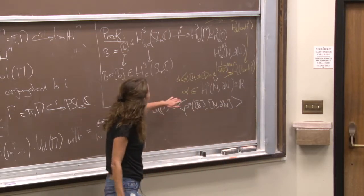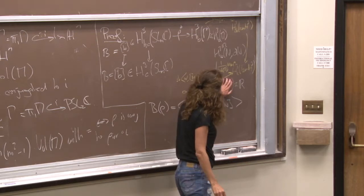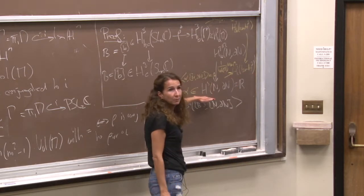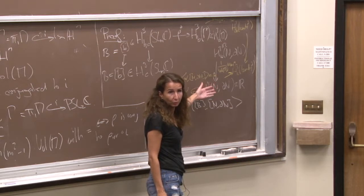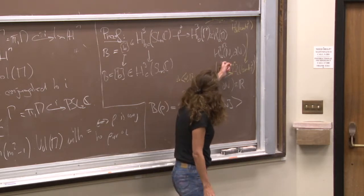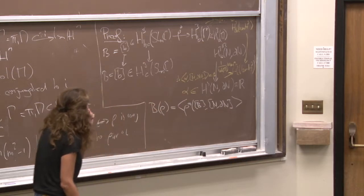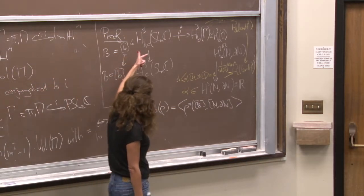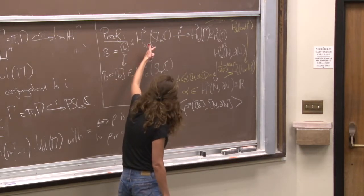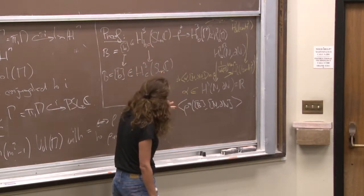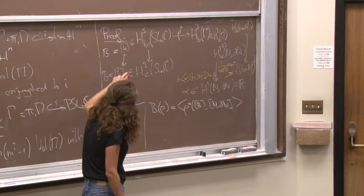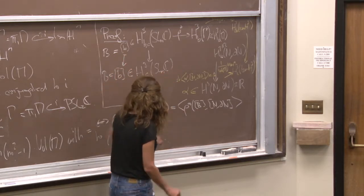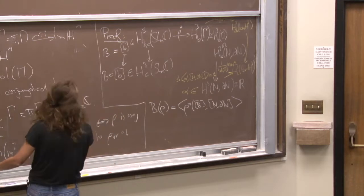If you think about it for manifolds without a boundary — the volume form, when you restrict it to the compact manifold, gives you exactly the hyperbolic volume of the manifold. So this is where this scaling factor is coming from.